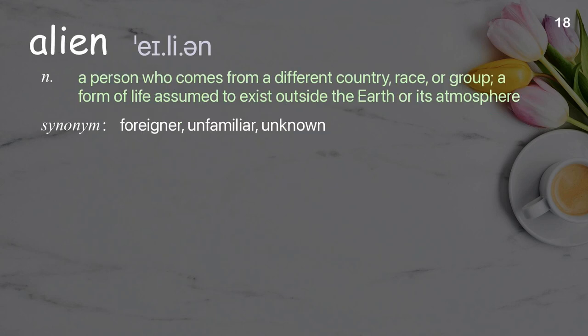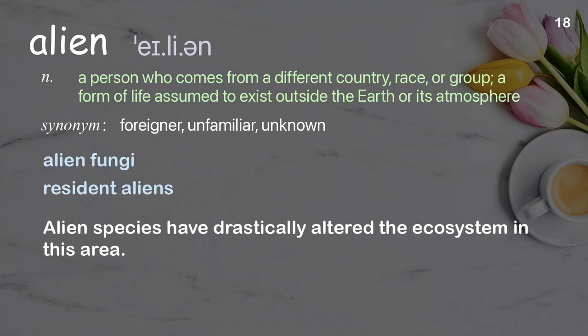Alien. A person who comes from a different country, race, or group; a form of life assumed to exist outside the earth or its atmosphere. Examples: alien fungi, resident aliens. Sentence: Alien species have drastically altered the ecosystem in this area.